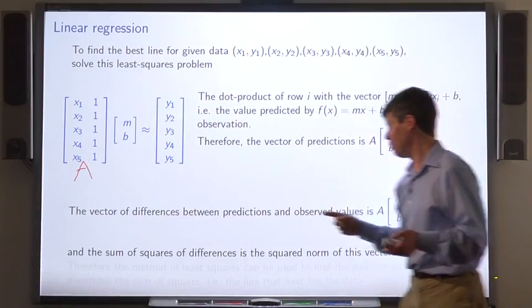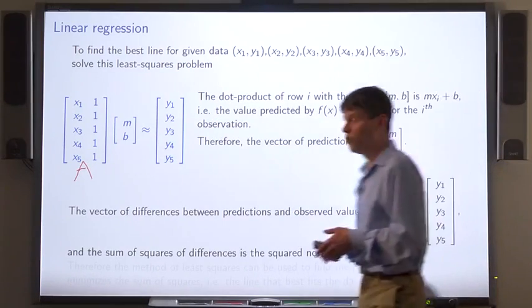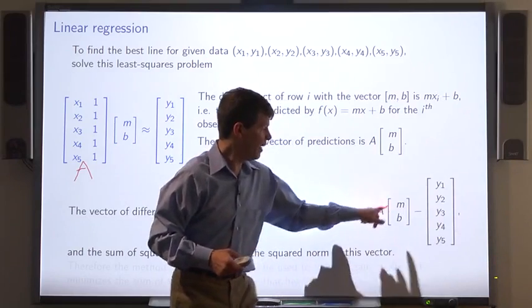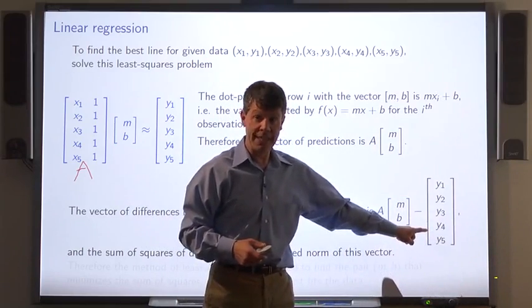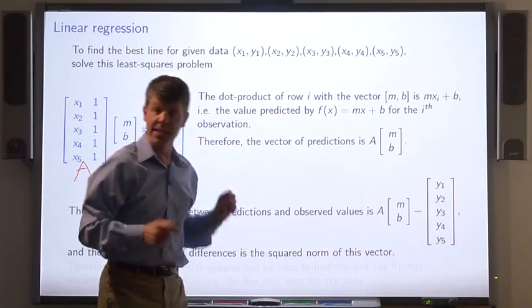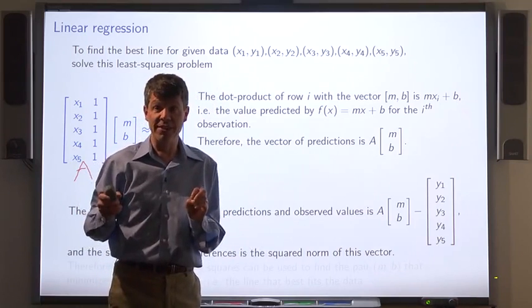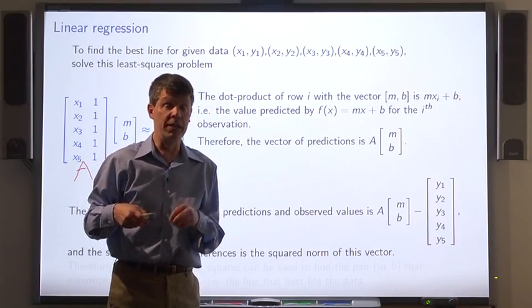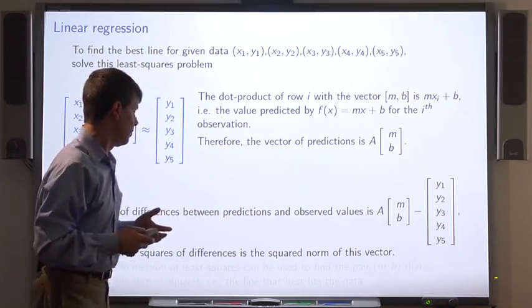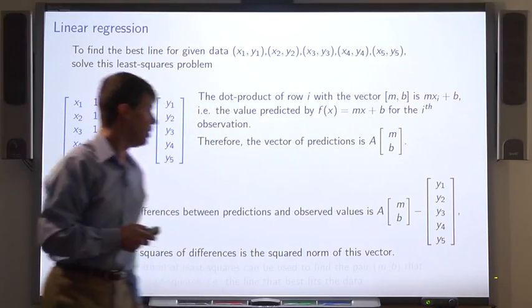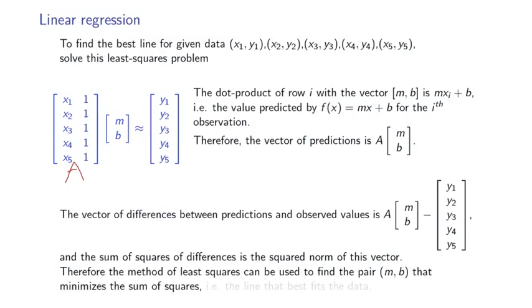The vector of differences between predictions and observed values, therefore, is A times mb minus the observed values. And the sum of squares of differences, that is the measure of the error of this line, is just the squared norm of this vector. So the method of least squares will find us the vector mb, such that m times x plus b is the best line, the line that best fits this data.